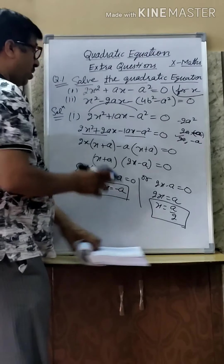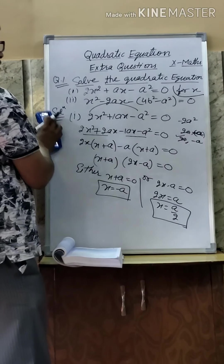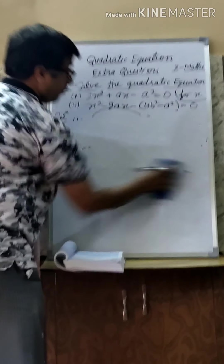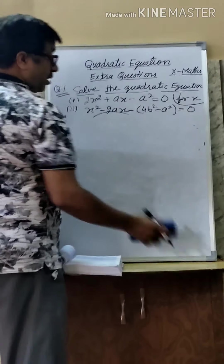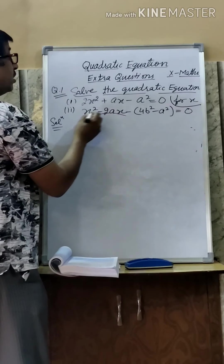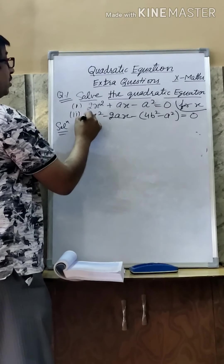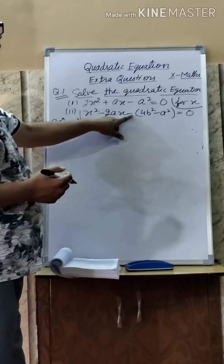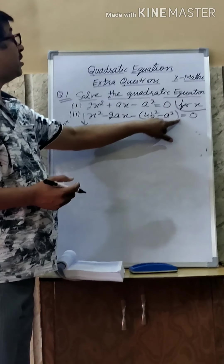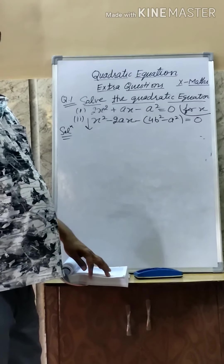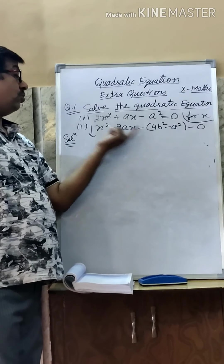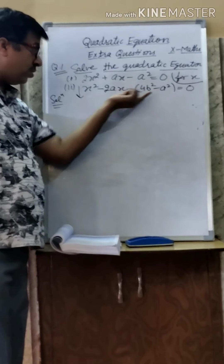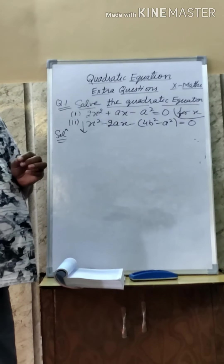So now, in the same way, if I am taking the second equation — you see this second equation. Here, the second equation is: X squared minus 2ax minus (4b squared minus a squared) is equal to 0. So if in the exam you are asked to solve for X by factorization, how to factorize — it is very much tough.